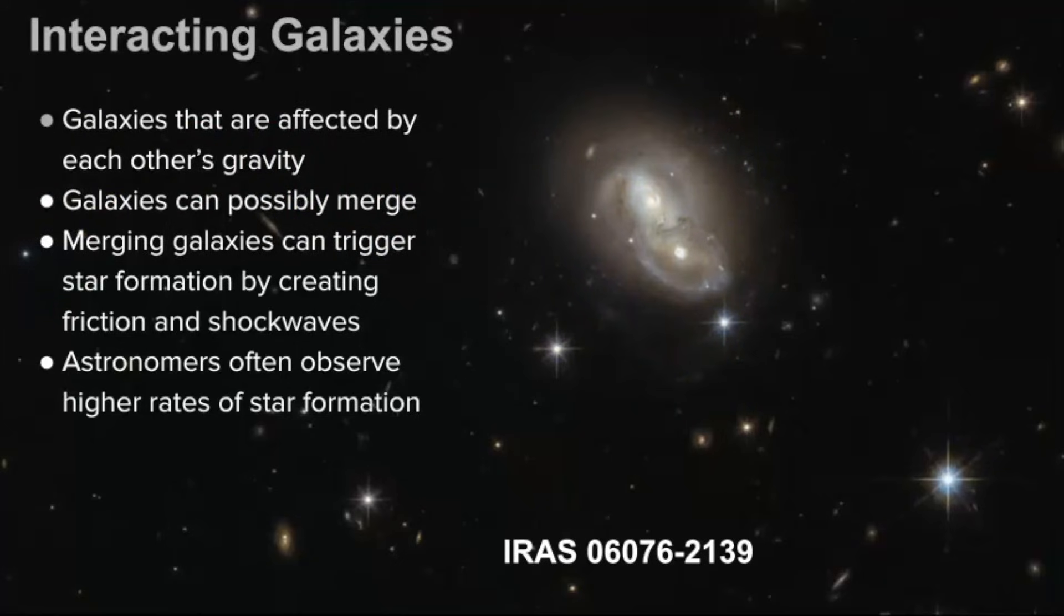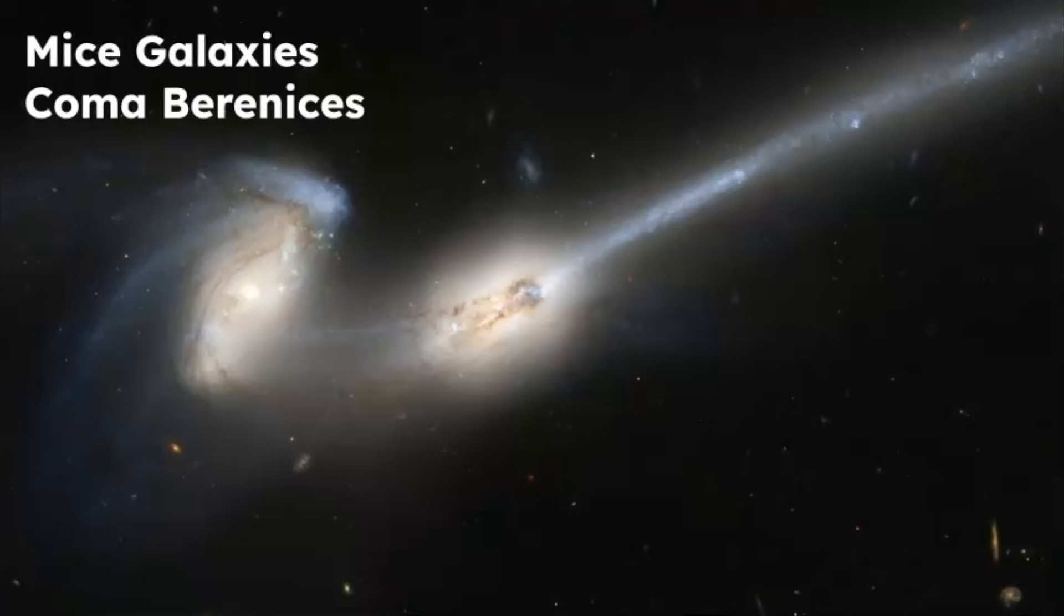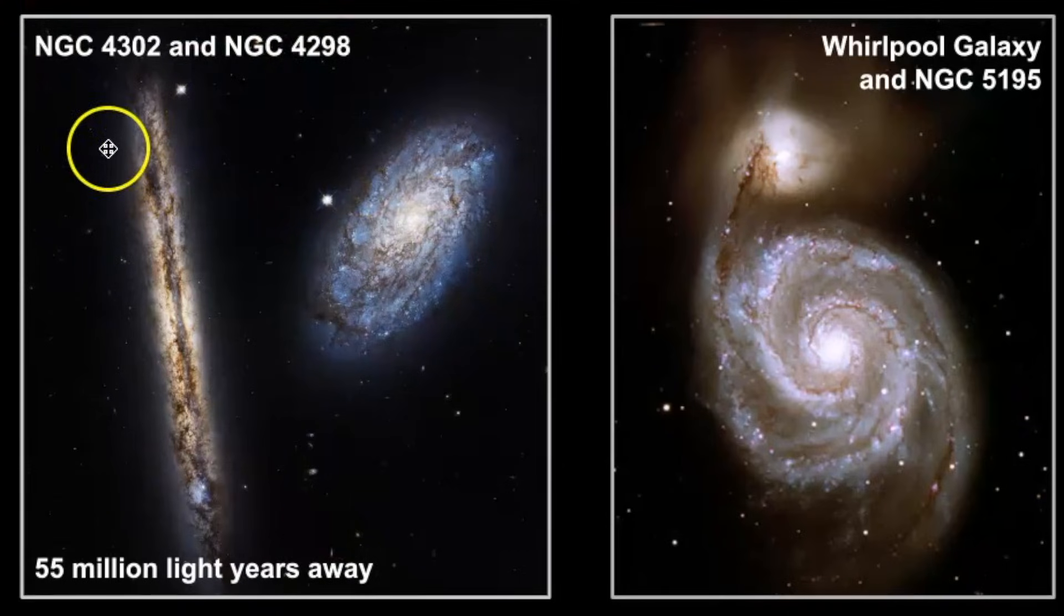Astronomers often find that merging galaxies have higher rates of star formation, much like that one starburst galaxy we looked at earlier. So let's take a look at some examples of merging and interacting galaxies. This is the Mice galaxies. These two are a pair in Coma Berenices. This right here is NGC 4302 and NGC 4298. It's estimated that these two are interacting with each other. And then the famous Whirlpool galaxy and NGC 5195. These two are interacting and then will eventually merge.